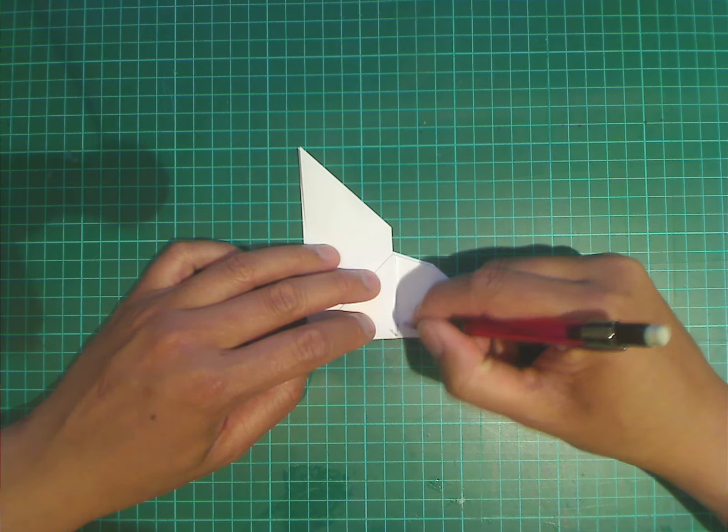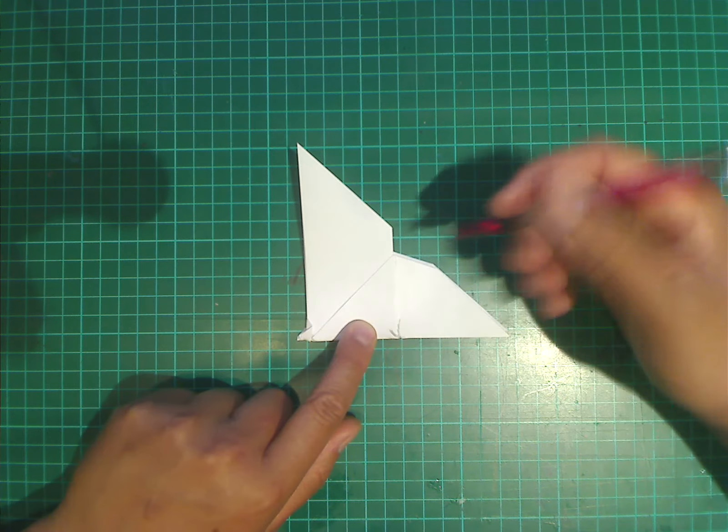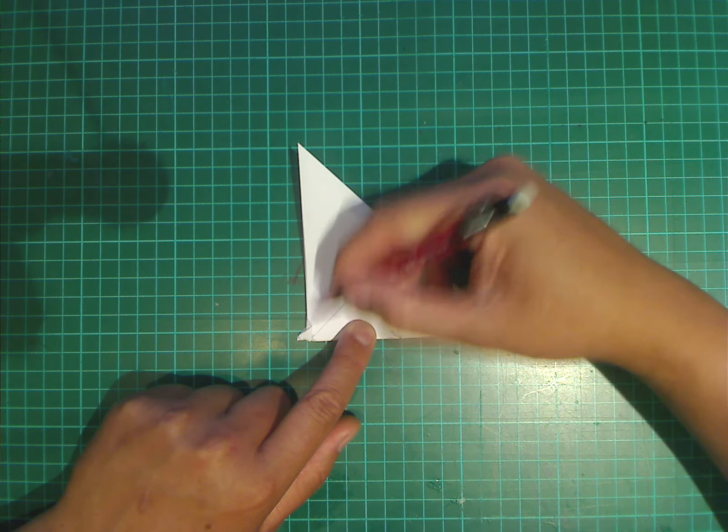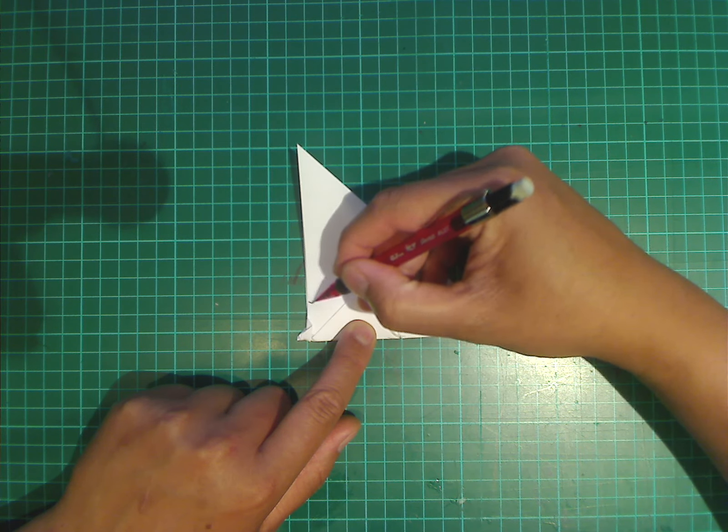Okay, we're going to make a diagonal from this corner to above the head. So about there. And again, it doesn't matter how far or low it is.